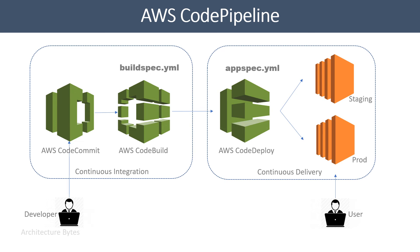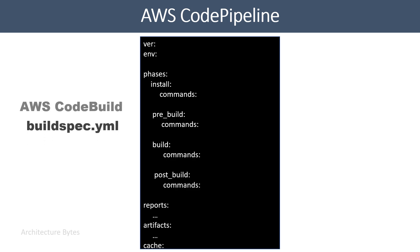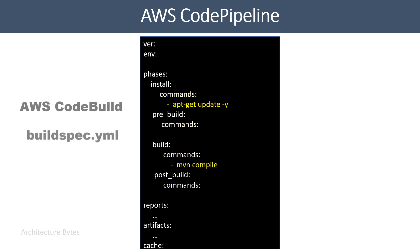Let's look at the buildspec and appspec YAML files we referred to earlier. A buildspec file is a collection of build commands and related settings that AWS CodeBuild uses to run a build. This file is expected to be present in the source code root directory by default. Here we see its basic structure — it has a bunch of phases and commands under them. You can write any command that your build platform will understand. This should give you an overall idea of the structure of a buildspec file.